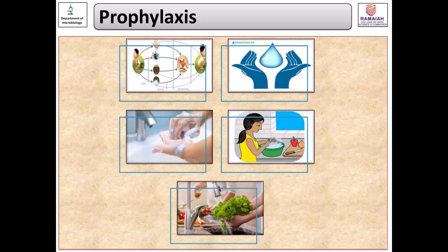Prophylactic measures to control amoebiasis all relate to hygiene and sanitation: sanitary disposal of fecal matter, maintenance of perfect sanitation, protection of water and vegetables from pollution, washing hands with antiseptic soap before touching food, cleanliness in preparing food, and washing vegetables and other raw materials properly before cooking.